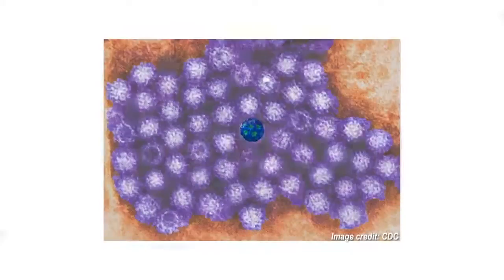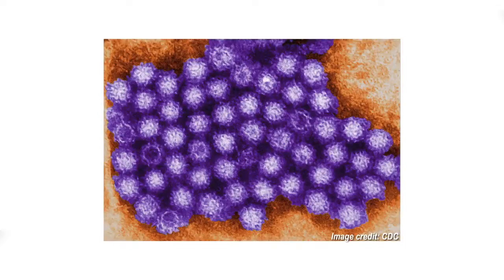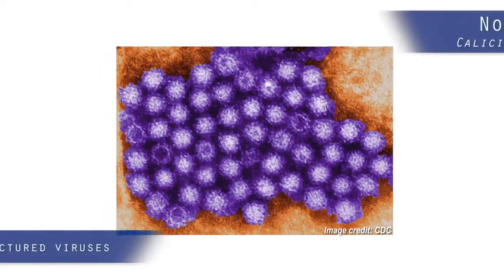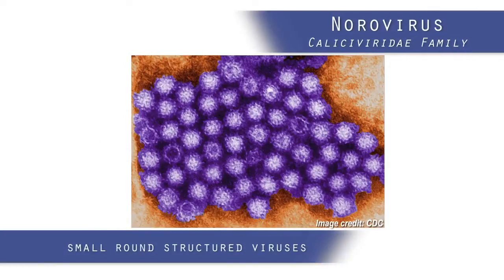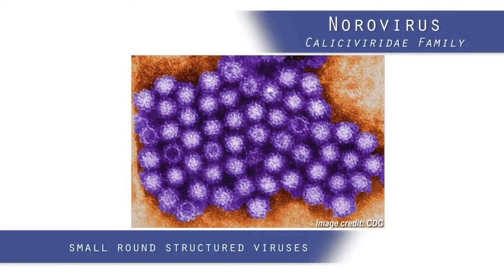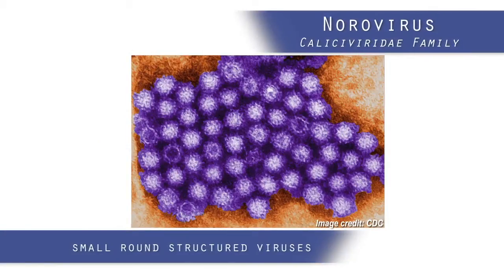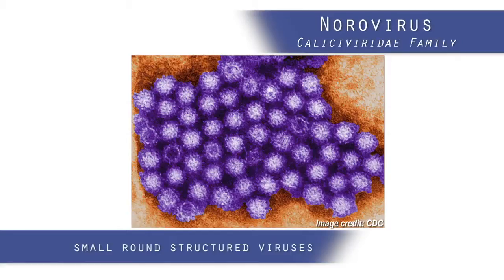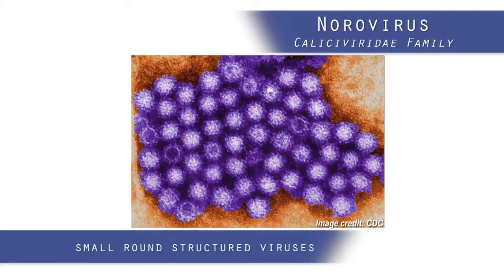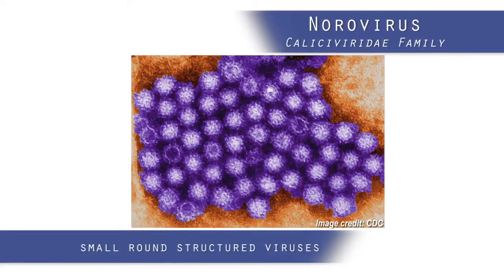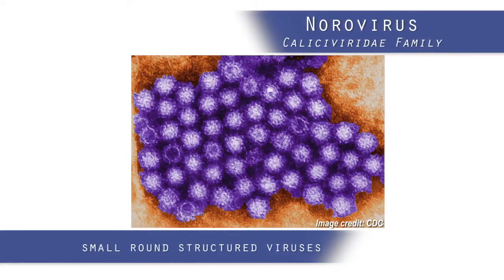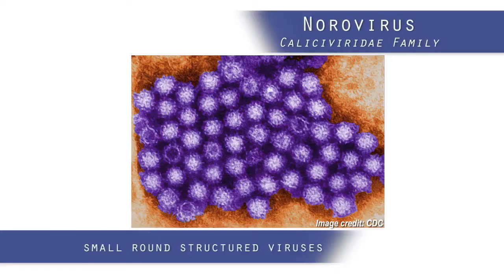Early visualizations were made using immune electron microscopy, and based upon these observations, these viruses were referred to as small, round-structured viruses. Over time, an increased understanding of this virus has been obtained, and they are now called noroviruses, a member of the Caliciviridae family.